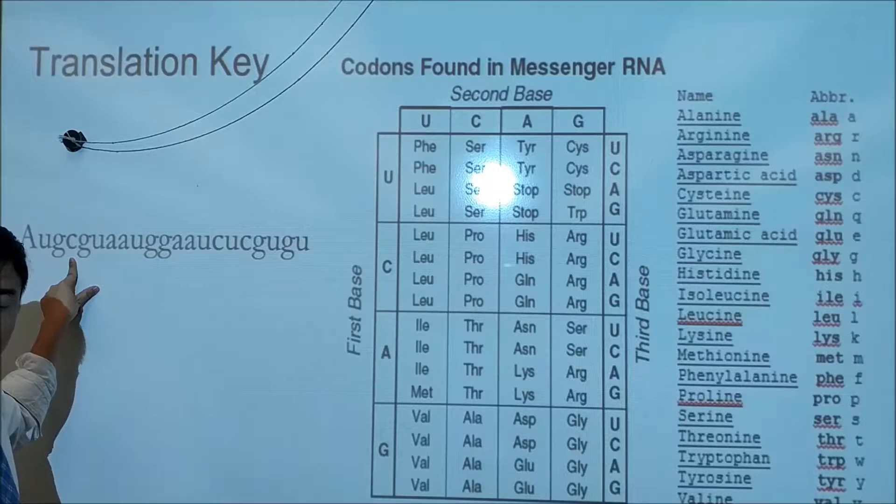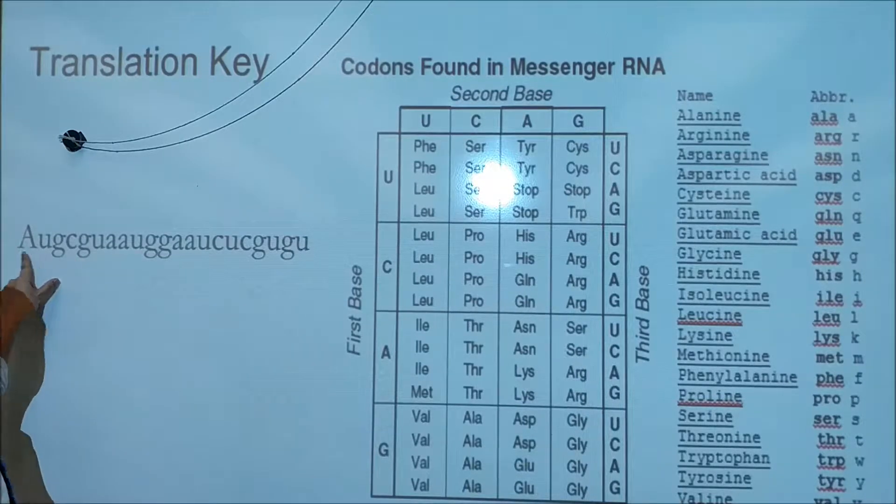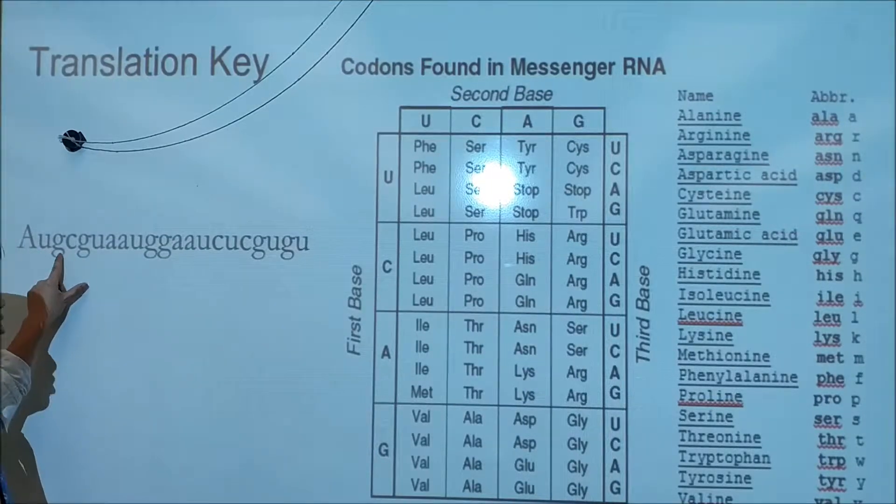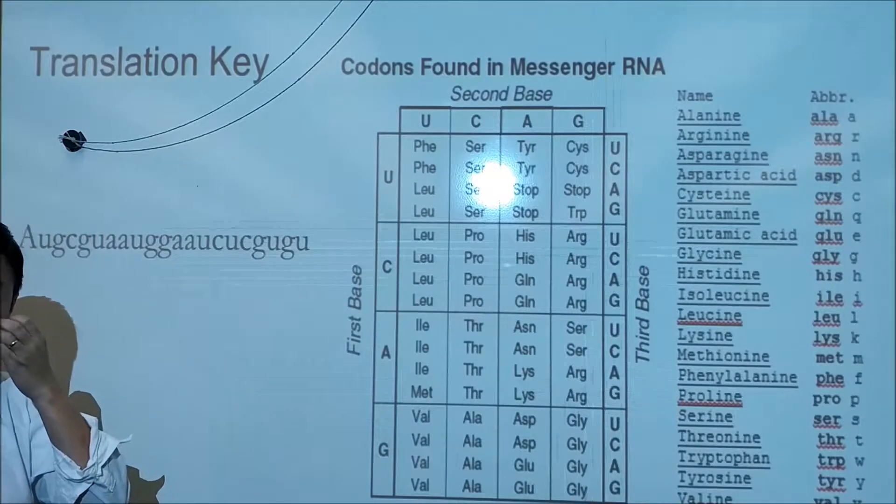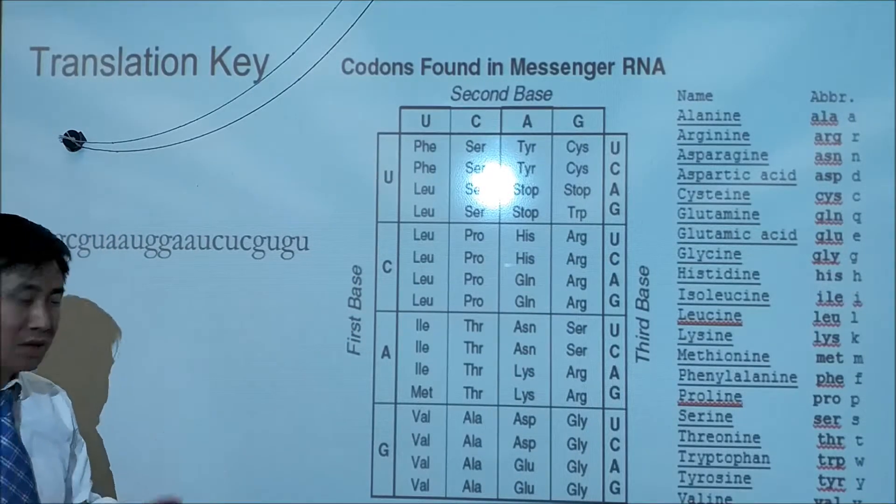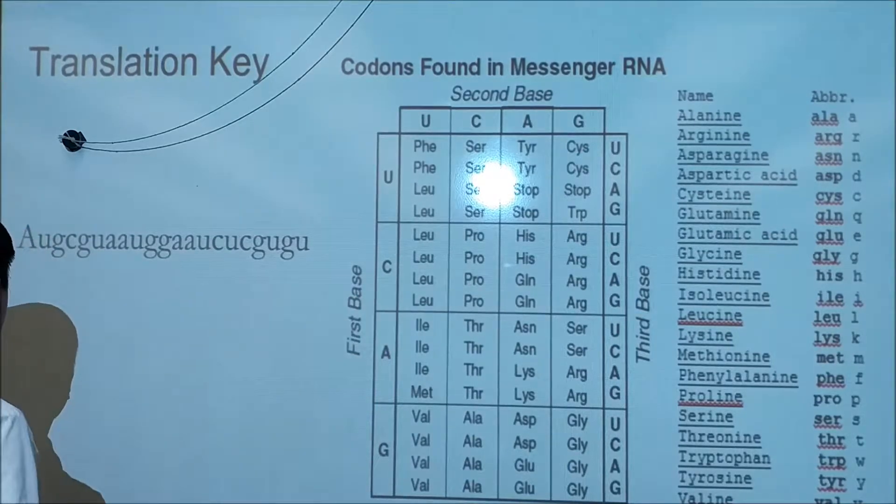In DNA it's A, T, G, and C, but here it's A, U, G, and C. So we know we're dealing with the nitrogenous bases of RNA.